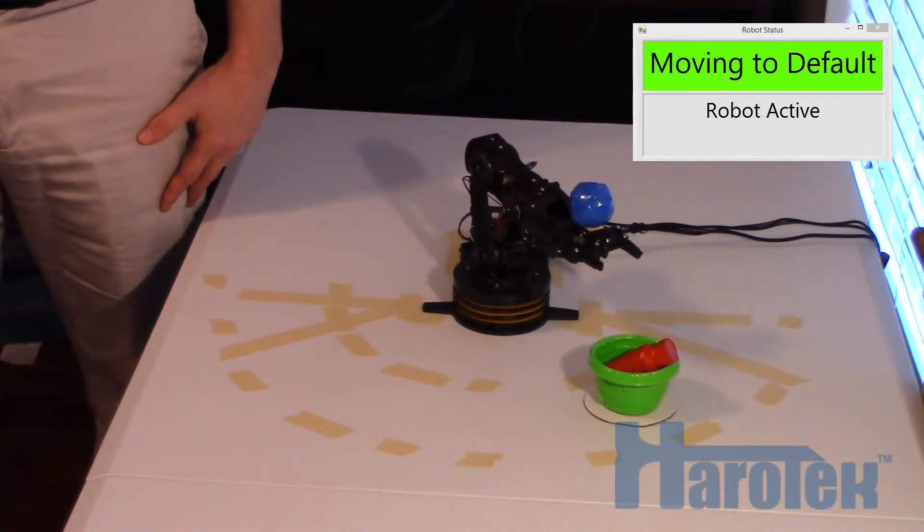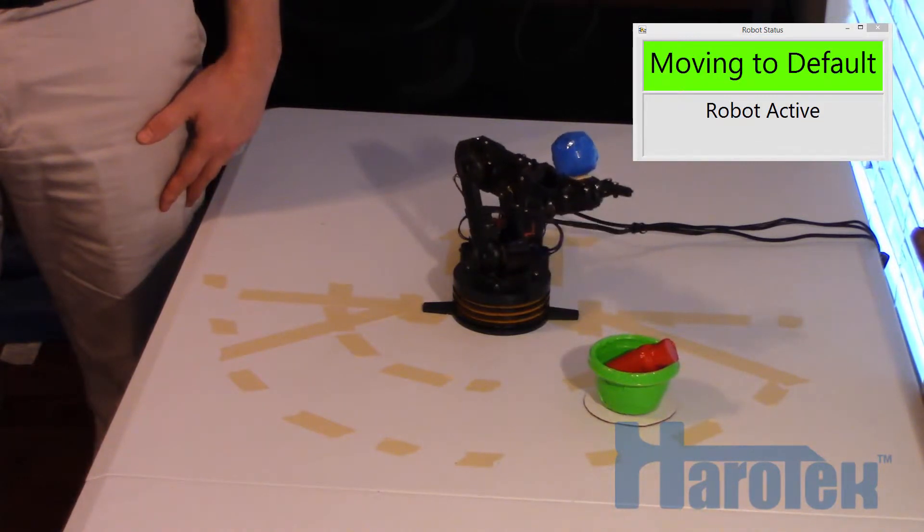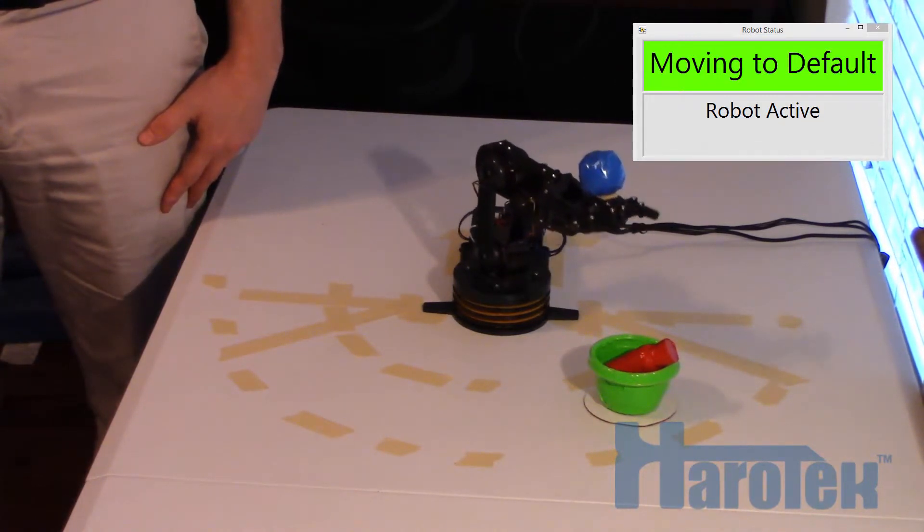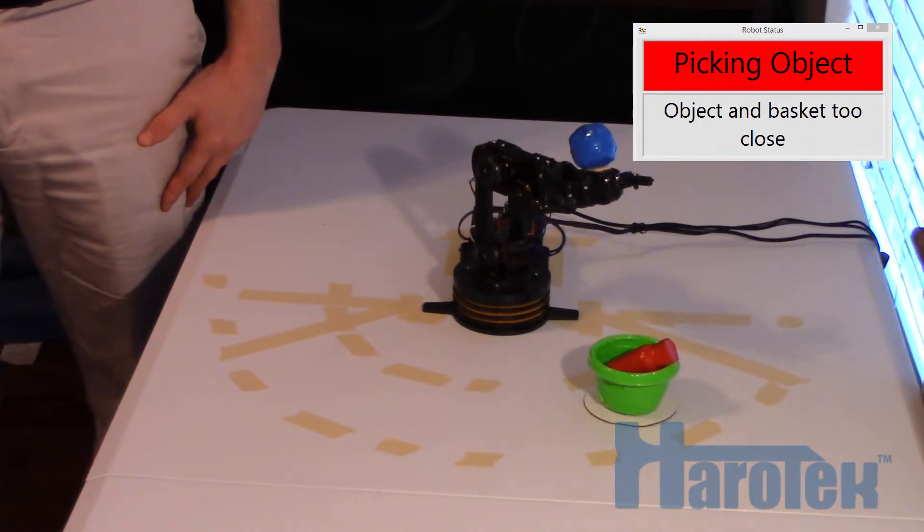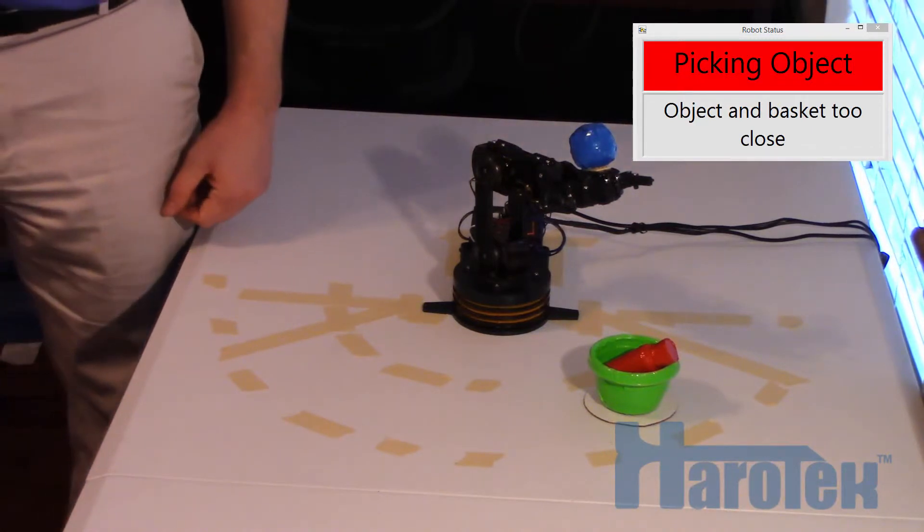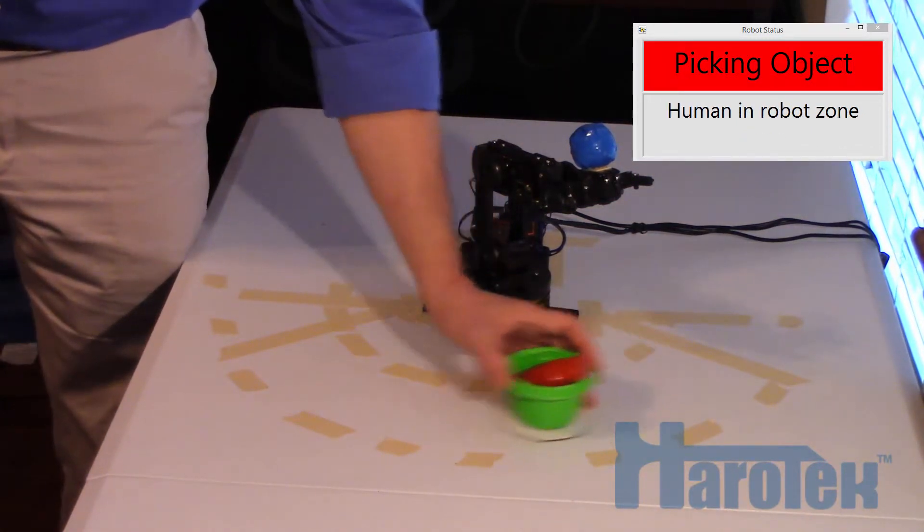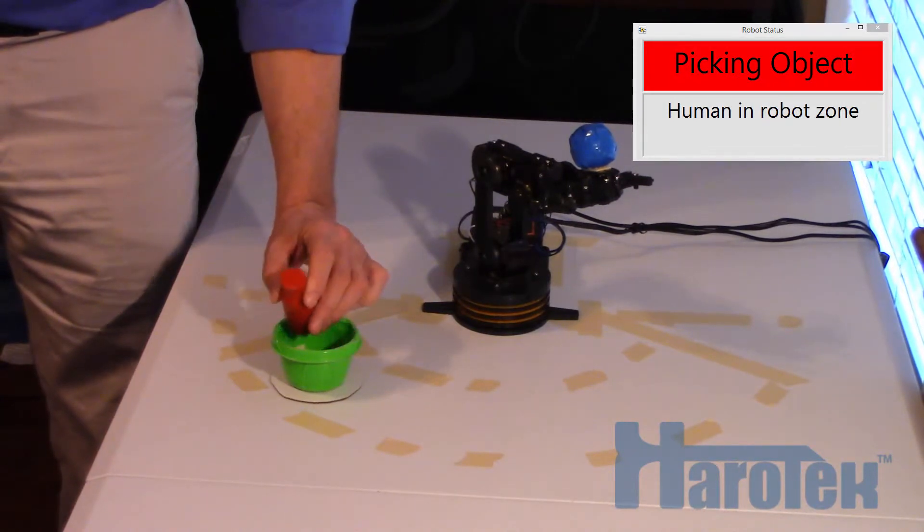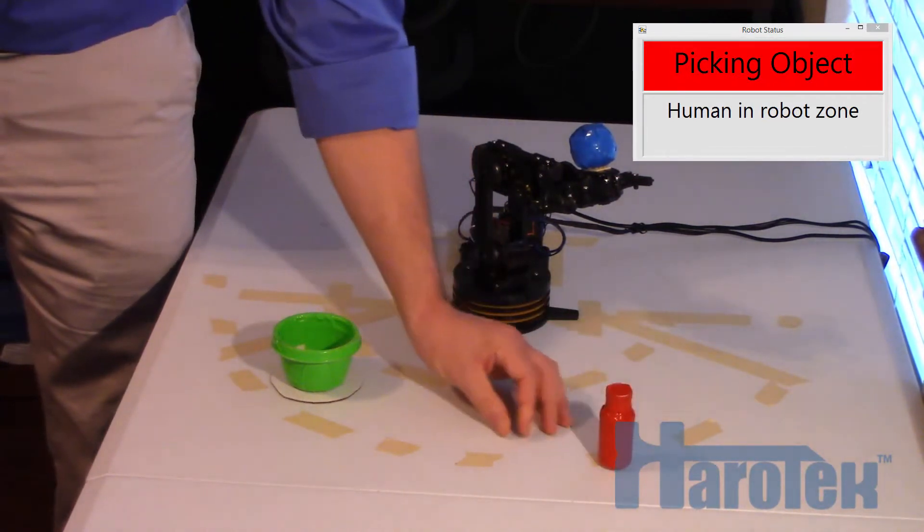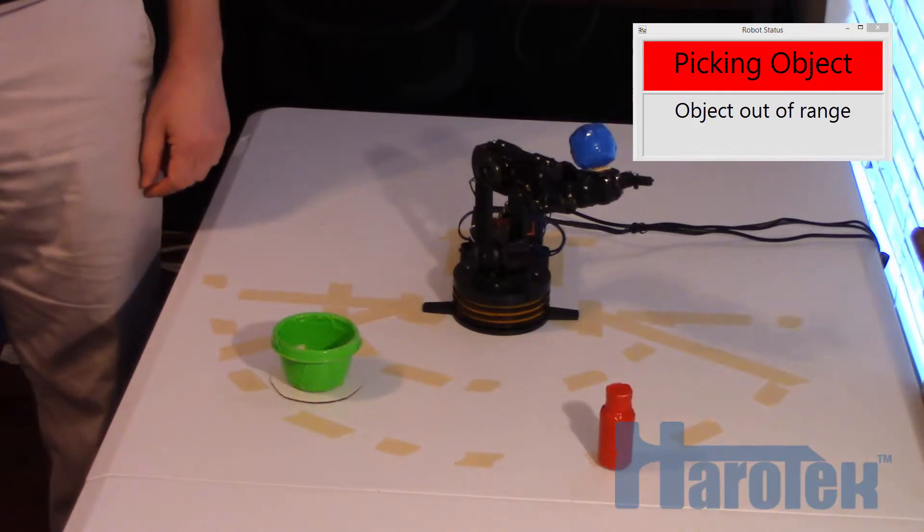The first section is shown. Now the Kinect sees the object and the basket as too close to each other. The basket and the object are moved to a random location within the robot zone. When the software sees that all conditions are satisfied, it starts the object picking process.